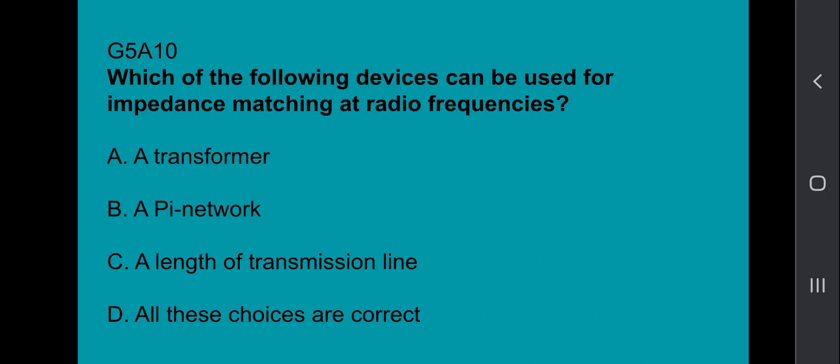G5A10, which of the following devices can be used for impedance matching at radio frequencies? That's all of the above. So, a transformer, a pi network, and a length of transmission line. Correct answer is, all of the choices are correct.